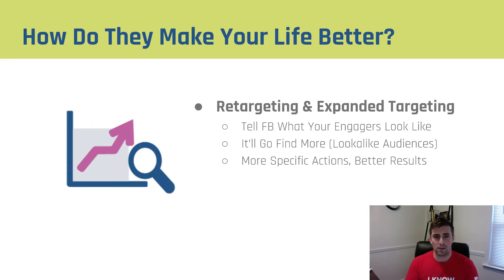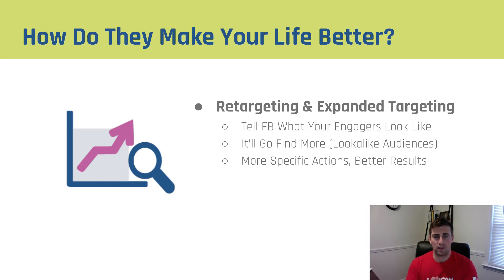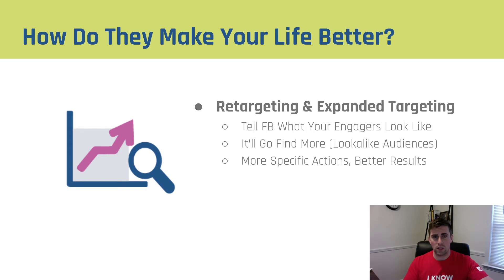In regards to engagement custom audiences, I like to talk about how they make your life better — retargeting and expanded targeting. We're bucketing our users and telling Facebook here's what our engagers look like: people who liked or interacted with a post or an ad, people who watched a certain amount of video. We set this up before we ever spend a penny because we want Facebook to start getting data we'll be able to use. When it's got that data, it can help us retarget. So if someone watched 75% of our video but didn't convert on our website, we can build a retargeting audience for them. We can also say for people who interacted with our ads, we want you to go find more people in a lookalike audience — that's how we expand our targeting.